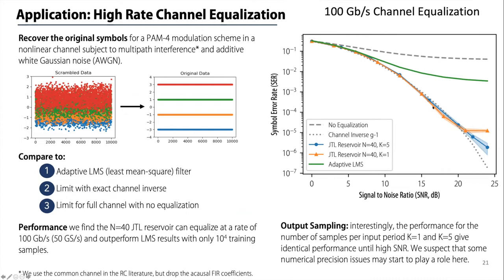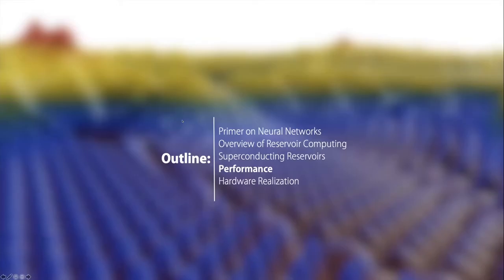This dotted line is as well as you can perform knowing the exact channel inverse function but not being able to correct for noise. What we find is that the superconducting reservoirs perform right at this limit. I should note for full disclosure that almost every reservoir we have tried performs at this limit. This is not a particularly hard problem, and that's something I think we need to be careful of in the literature. However, it does perform better than typical channel equalization methods.